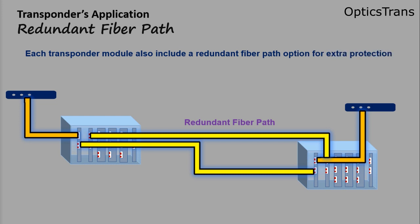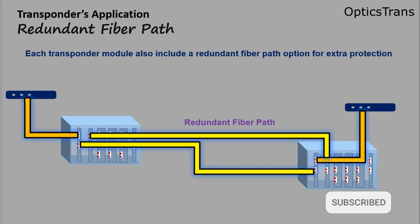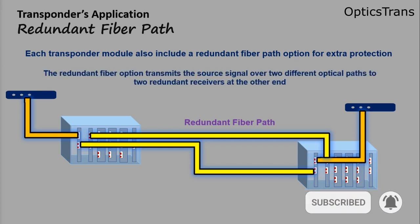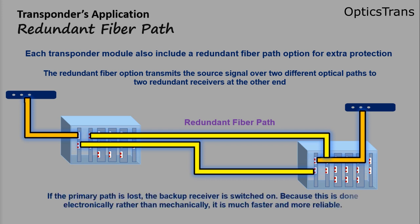Another use is for redundant fiber path. Each transponder module can also include a redundant fiber path option for extra protection. The redundant fiber option transmits the source signal over two different optical paths to two redundant receivers at the other end. If the primary path is lost, the backup receiver is switched on. Because this is done electronically rather than mechanically, it is much faster and more reliable.